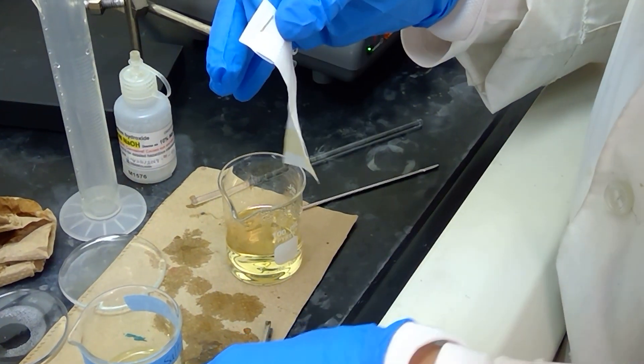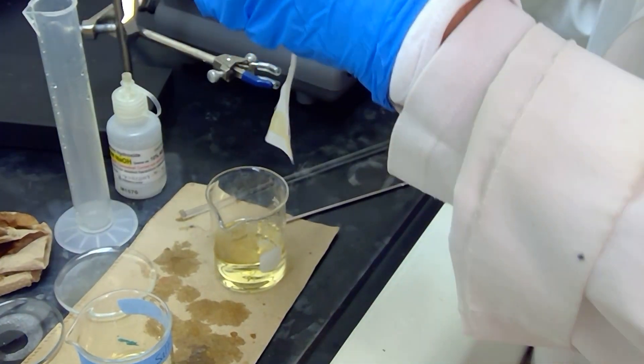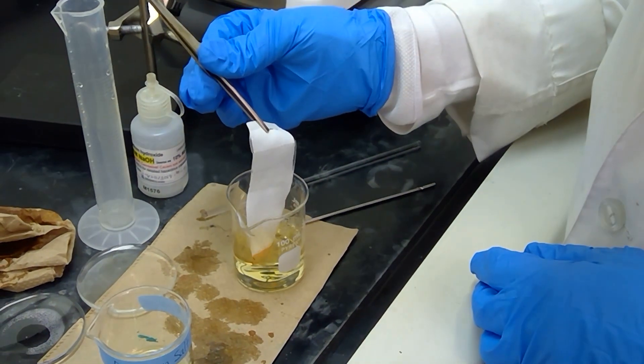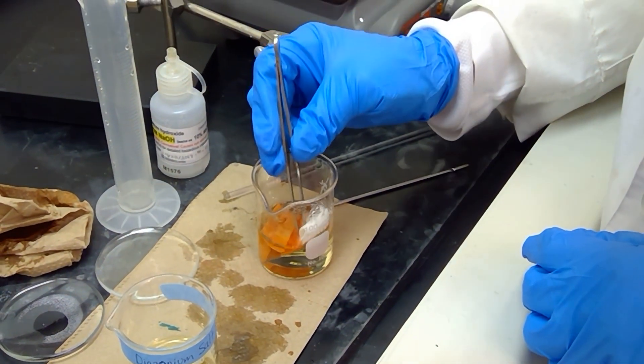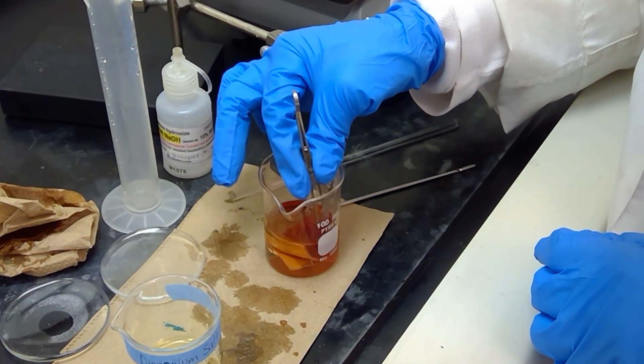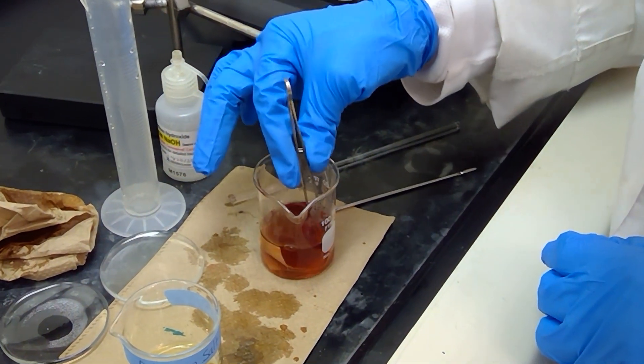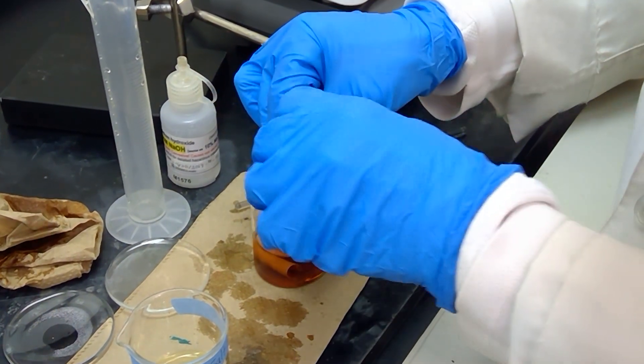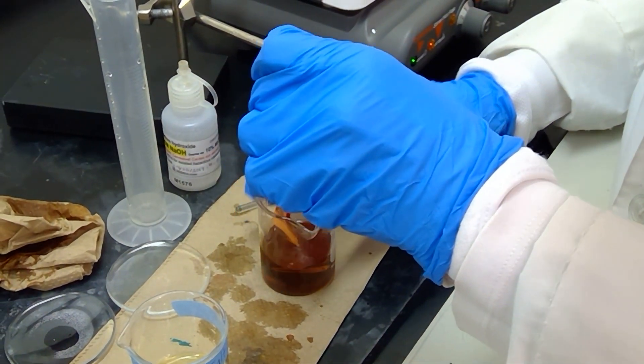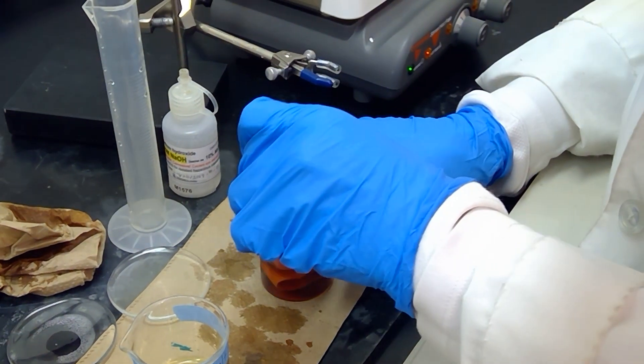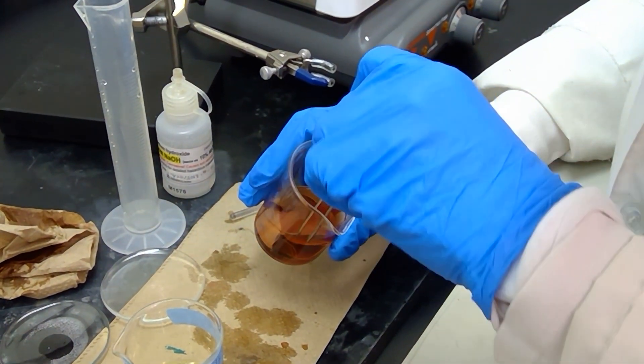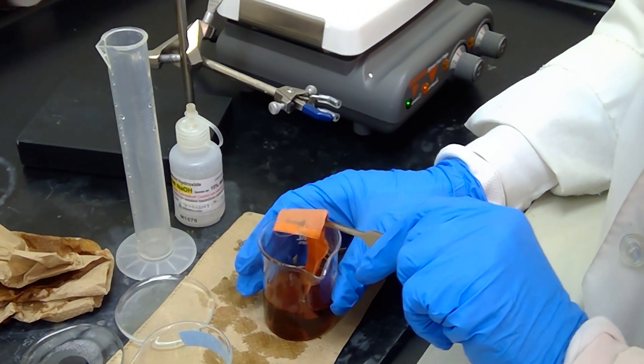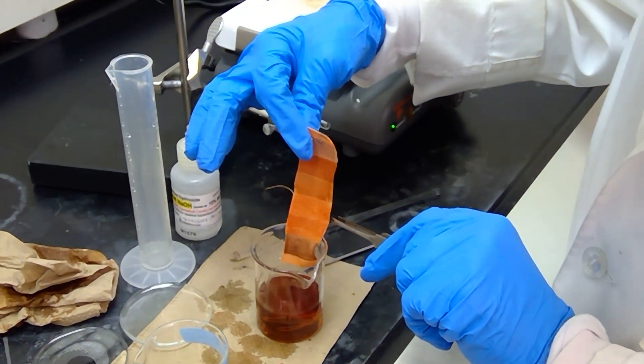I am now placing the fabric strip into the solution of 2-naphthol, and we should see American Flag Red result in just a moment. Alright, so if you notice here, the colors that I'm getting are a little bit orange-ish, and not necessarily extremely red. But the reason for that is, the fabrics here are not the same type that the first American Flag was made with.